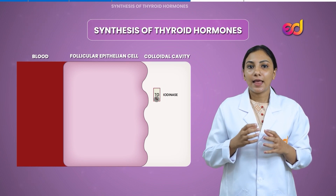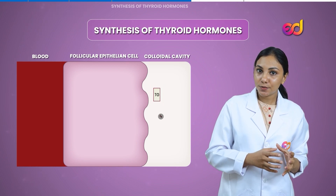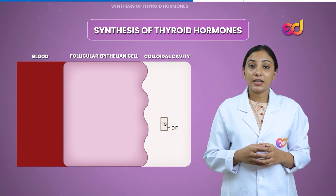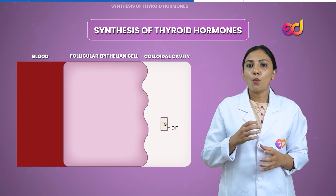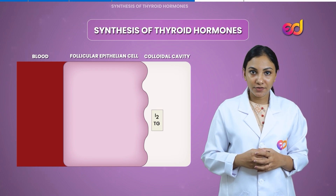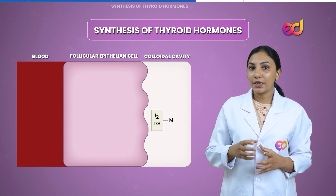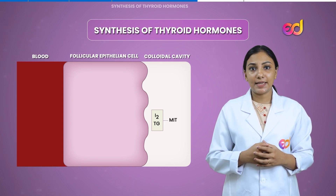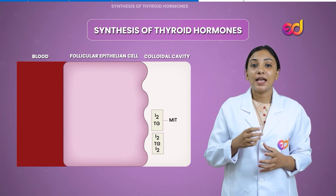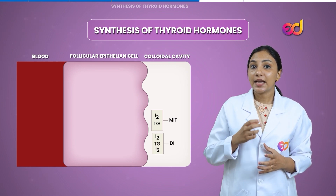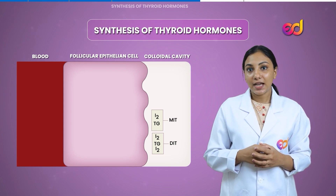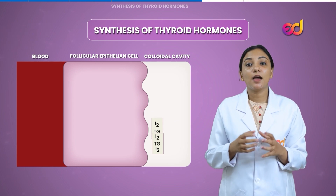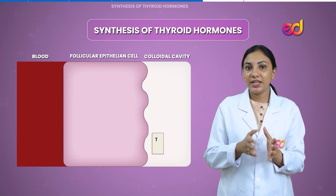This iodination process is activated by an enzyme called iodinase, which is secreted by follicular cells, thereby converting the tyrosine molecule to MIT (monoiodotyrosine) and then later into DIT (diiodotyrosine). If only one iodine binds to the tyrosine ring it is referred to as monoiodotyrosine (MIT), and if two iodine molecules bind to tyrosine it is referred to as diiodotyrosine (DIT).